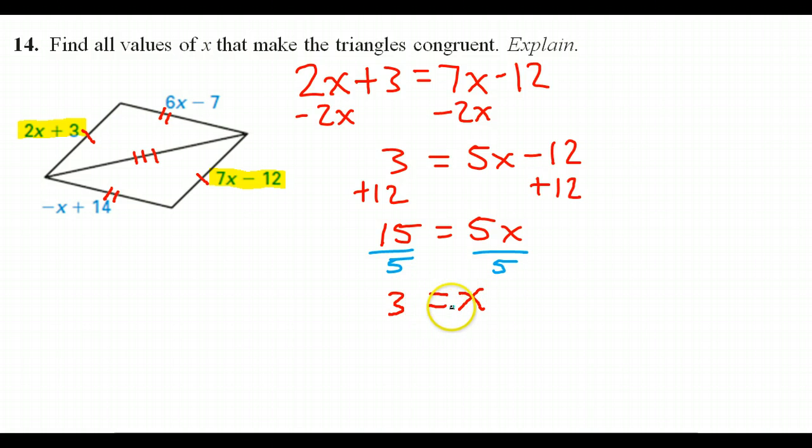Okay, so this is a possible solution, but to be sure that this is really a value of x that would make this congruent, let's take this x equals 3 and plug it back into these expressions. Okay, what if I plugged in 3 right here for x? And also, what if I took my 3 and I also plugged it in here for x? What would happen? Well, on this side, look at the 7x minus 12.